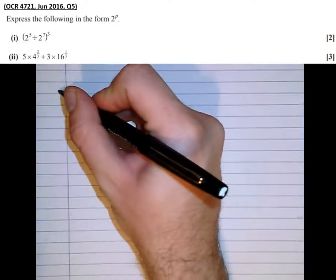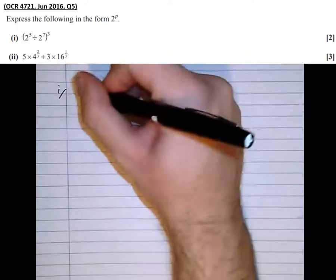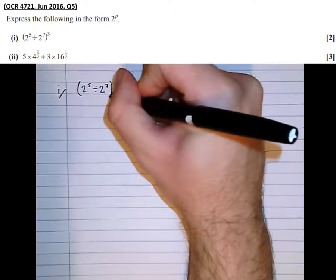So part 1. This one starts off relatively straightforward. We've got 2 to the power of 5 divided by 2 to the 7, cubed.